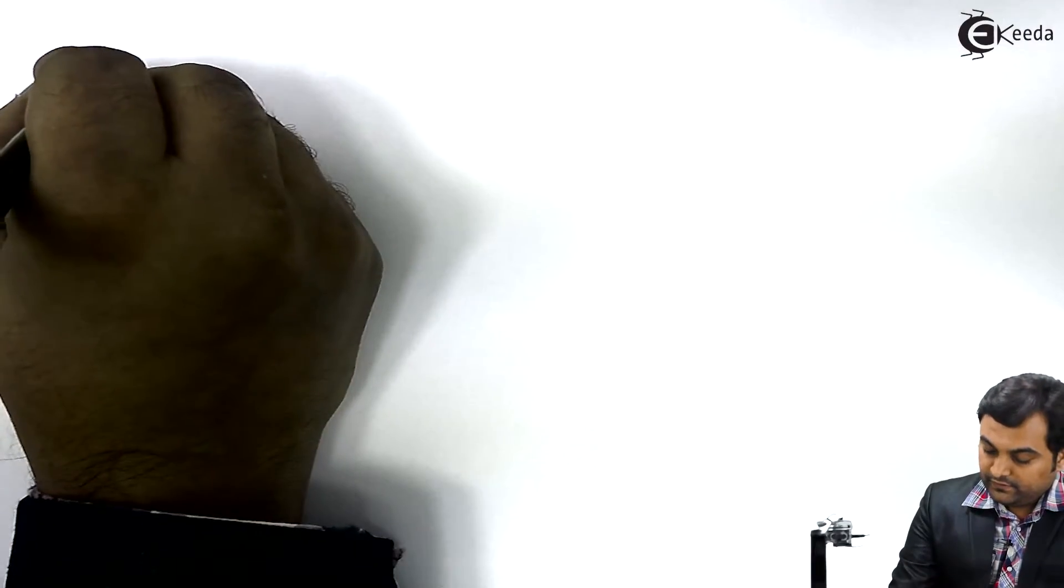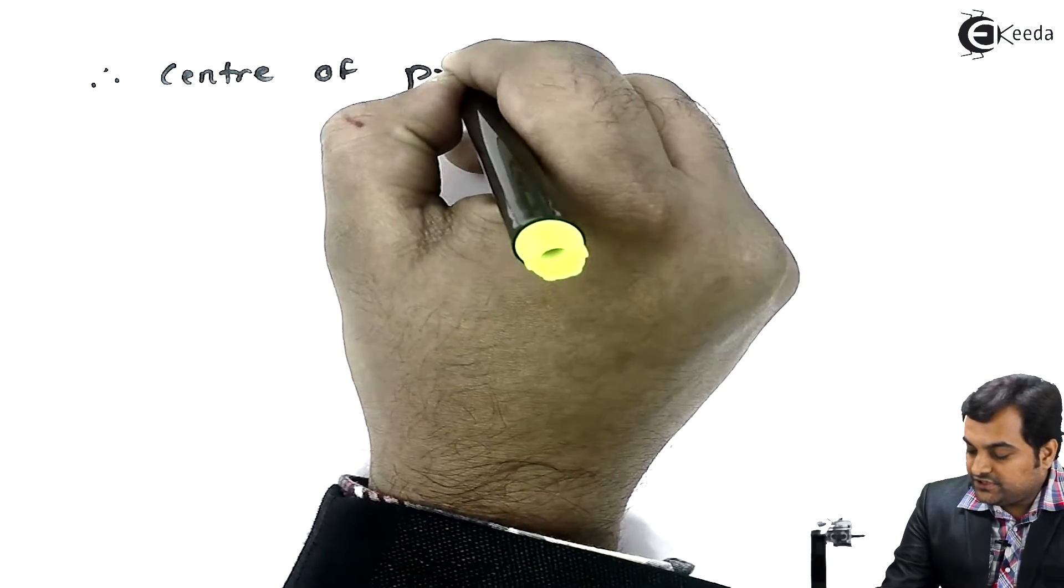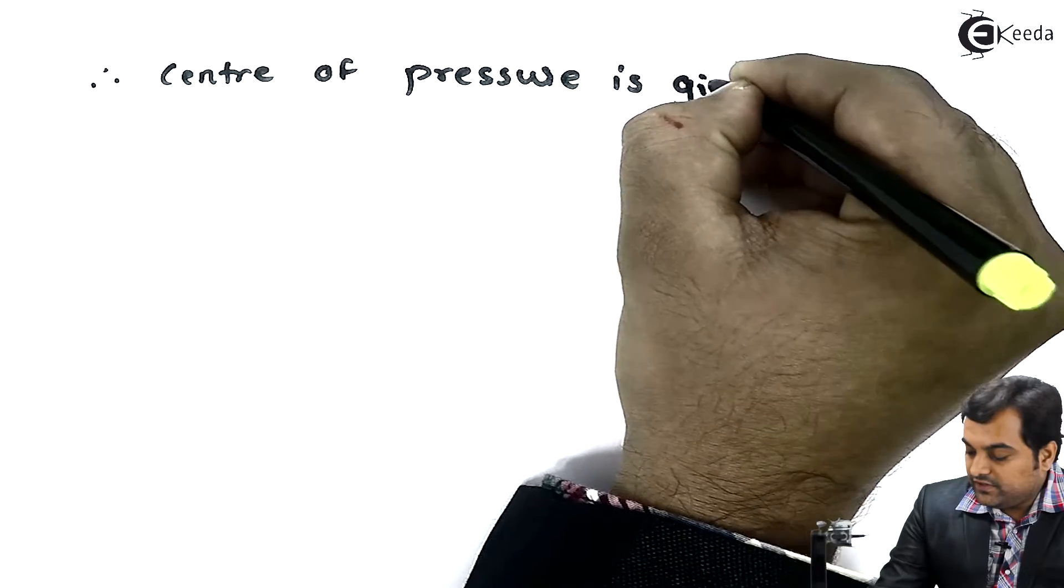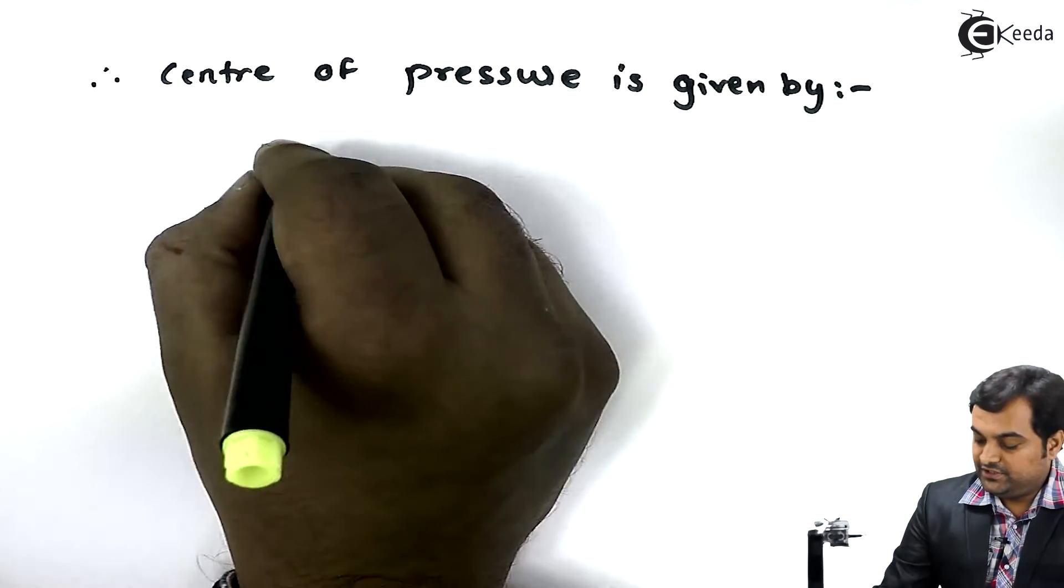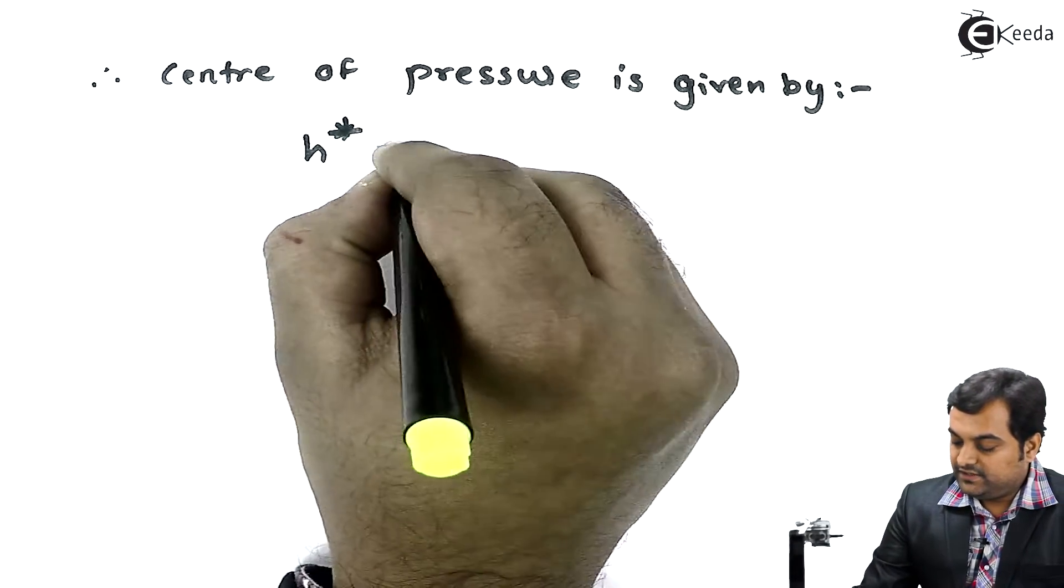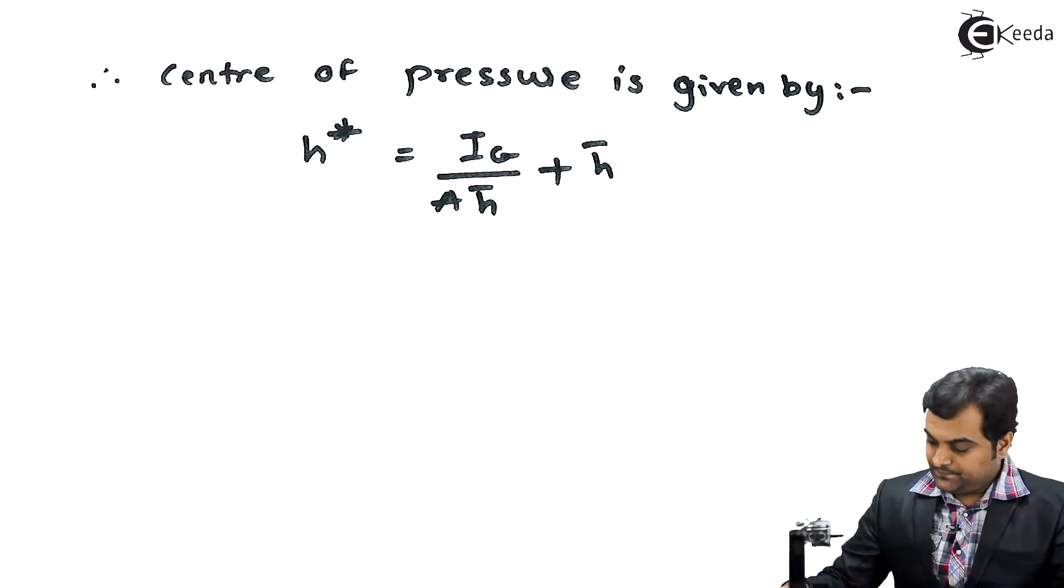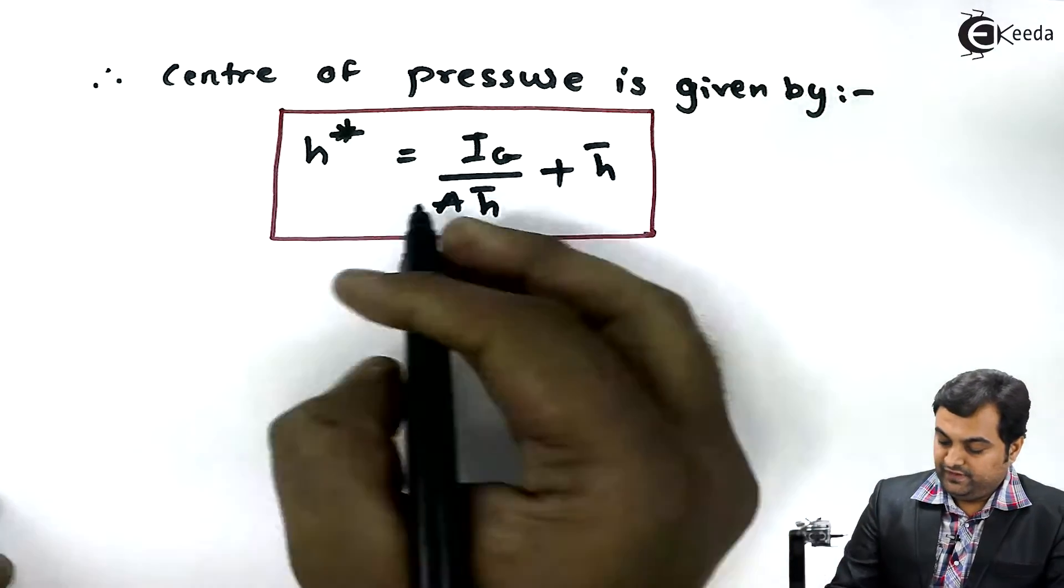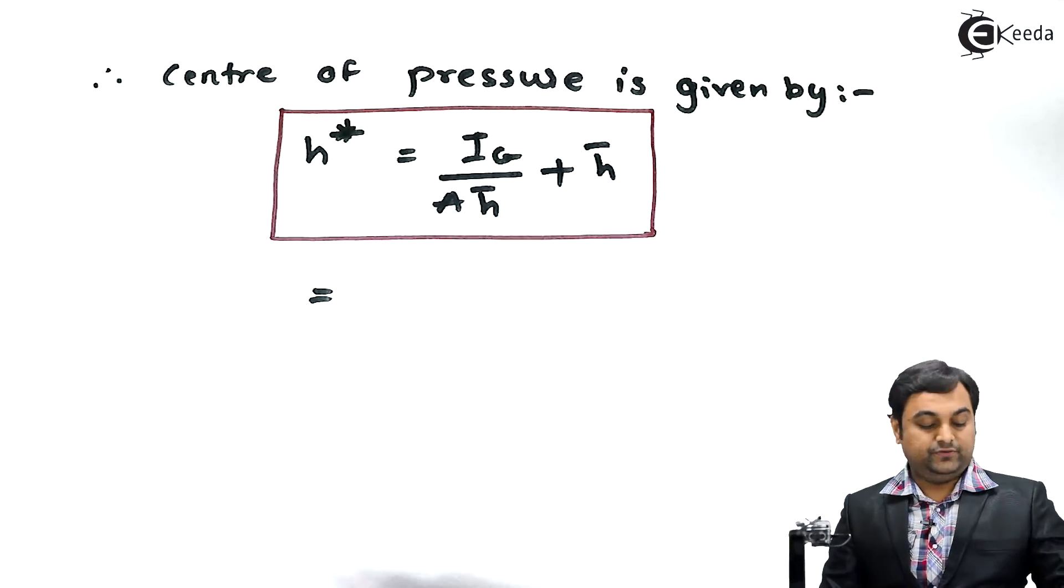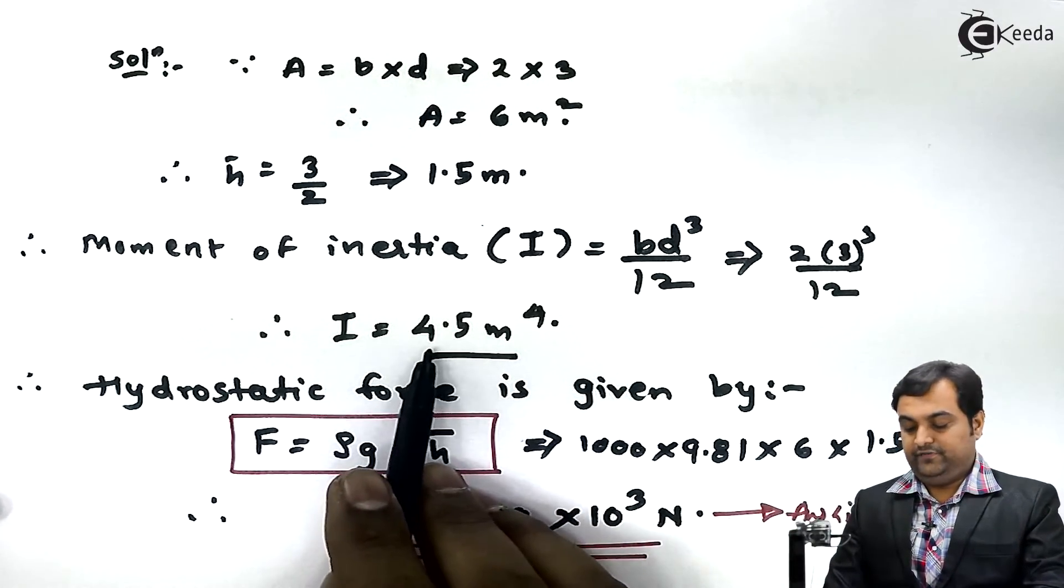Therefore center of pressure is given by the formula H* = IG/(A·H̄) + H̄. Now I'll put the values here because I have all the values. This IG is nothing but moment of inertia about the centroid, it was 4.5.